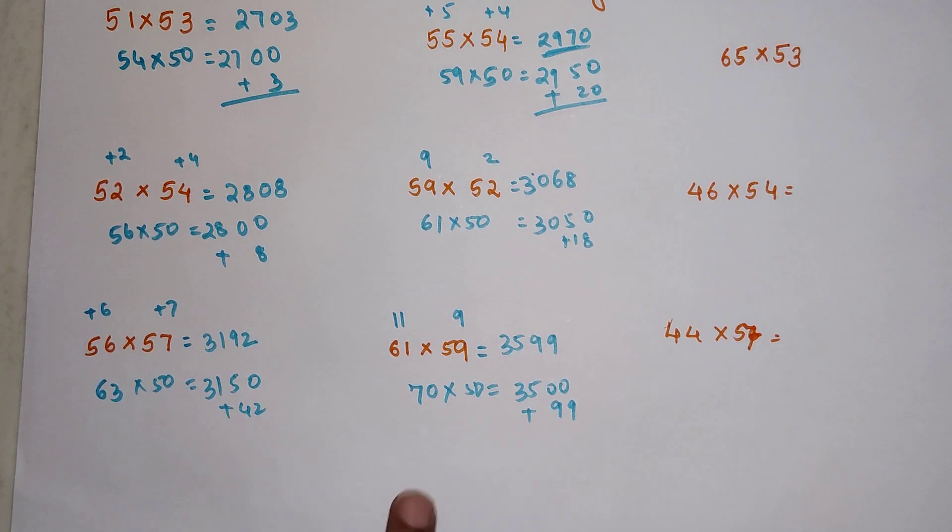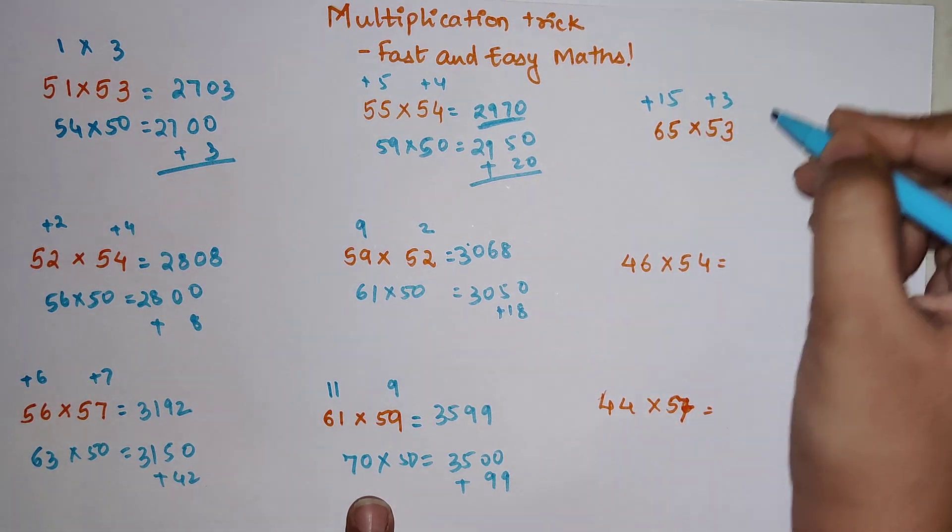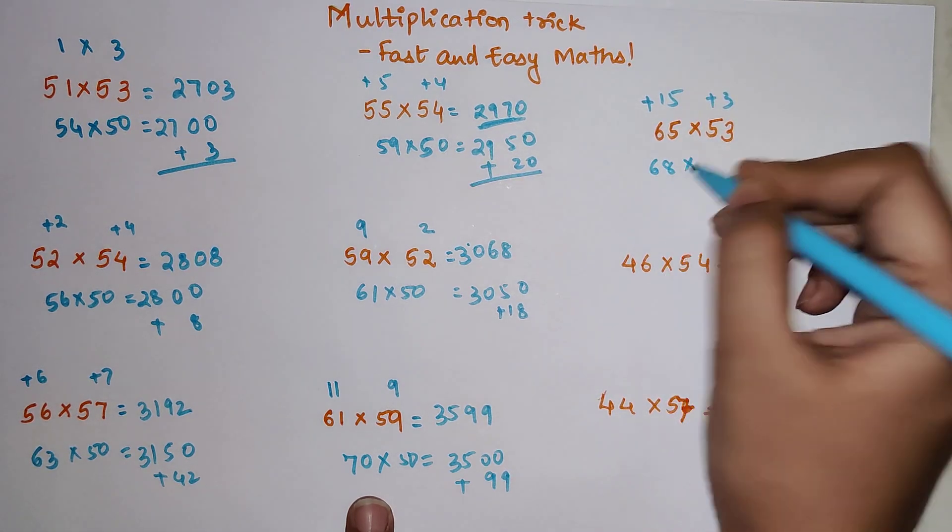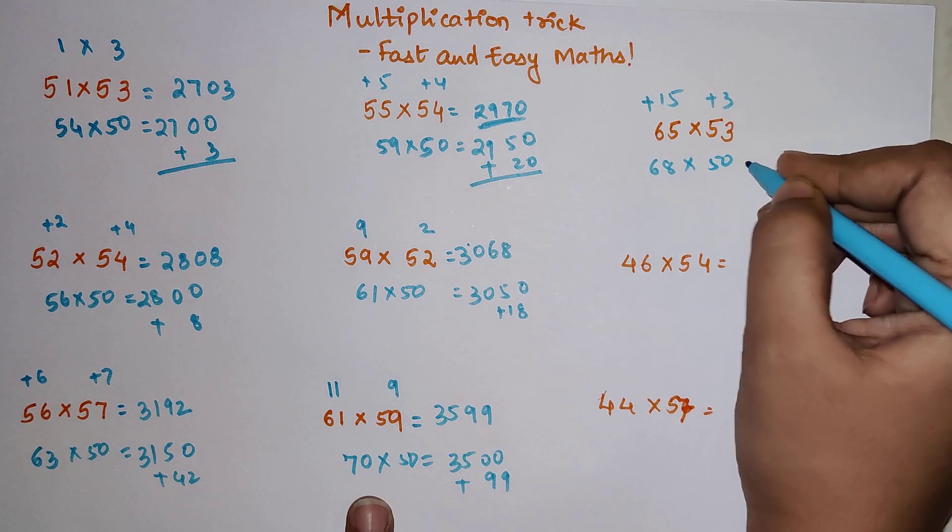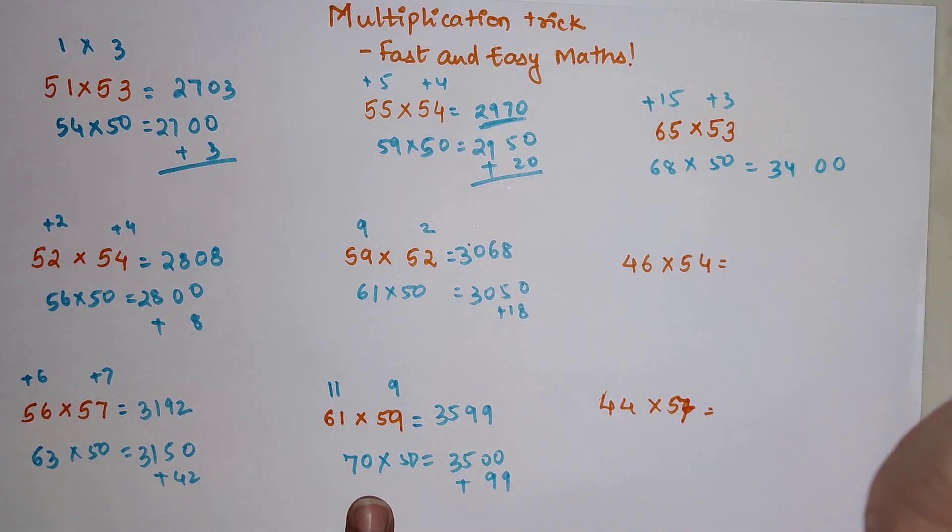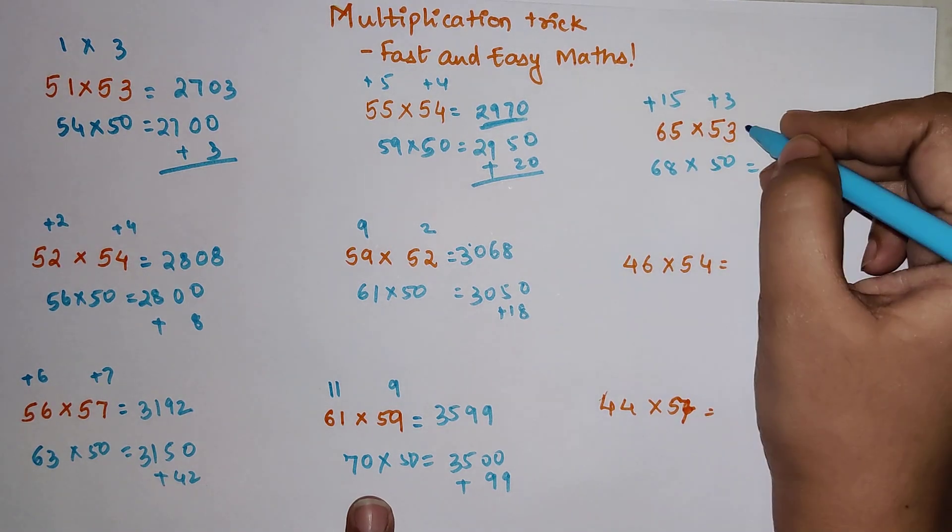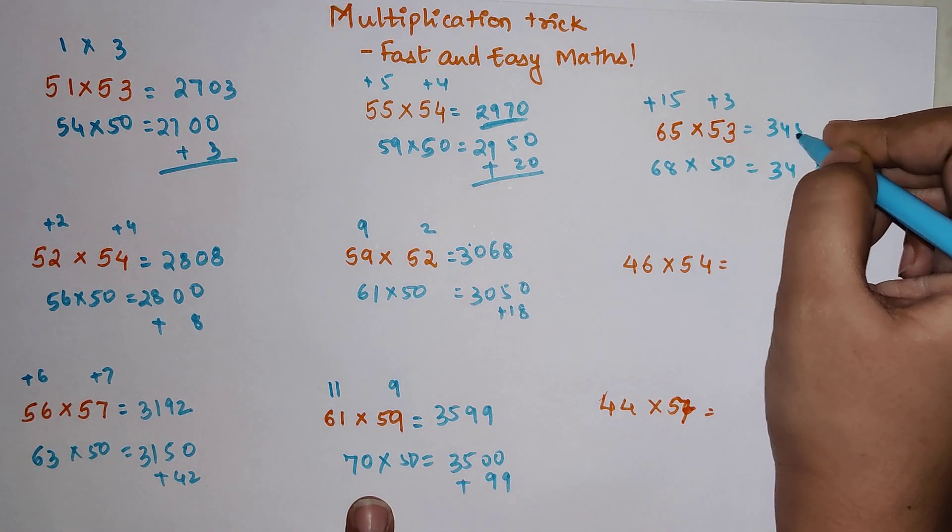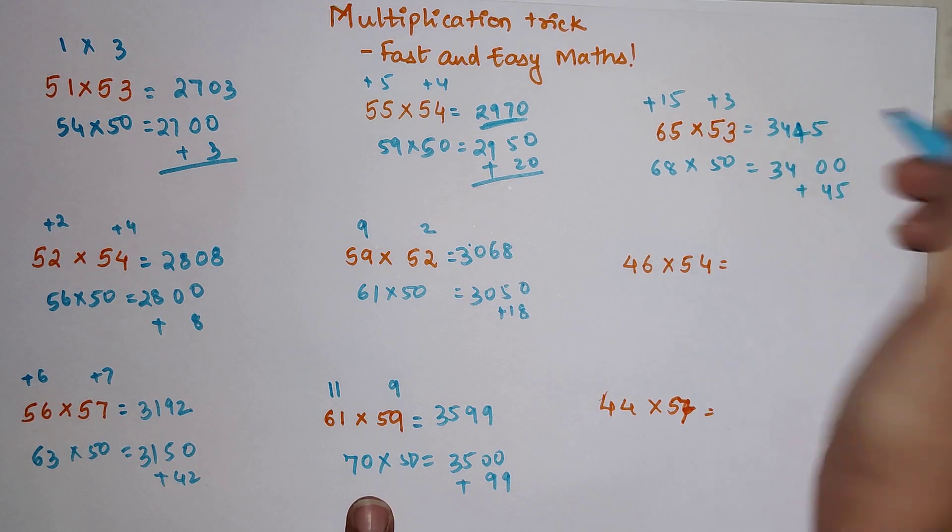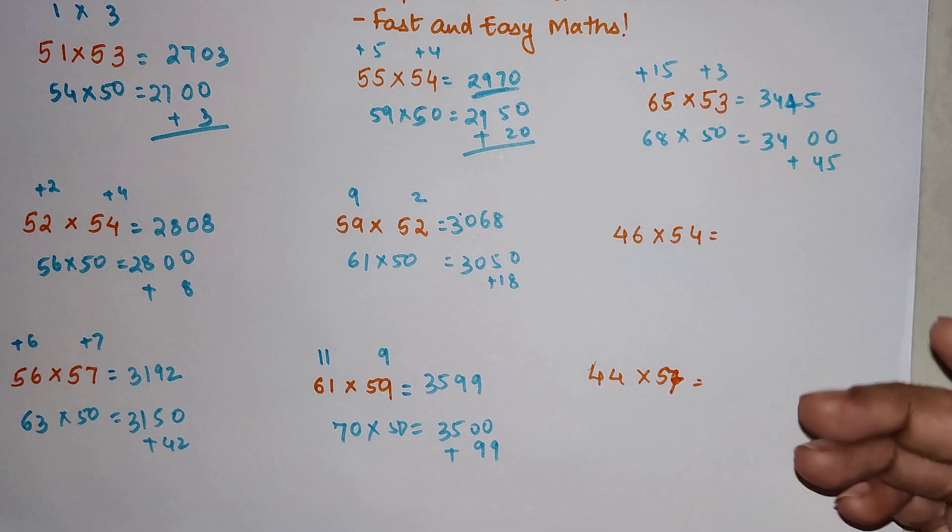Very quickly, this is plus 15, this is plus 3, so this is 68 times 50, which is 3400. When you add 15 times 3, that's 45, so your answer is 3445.